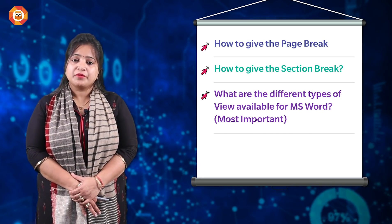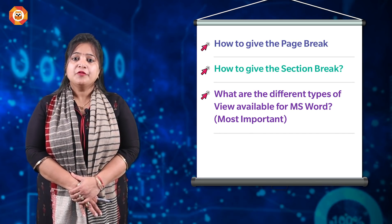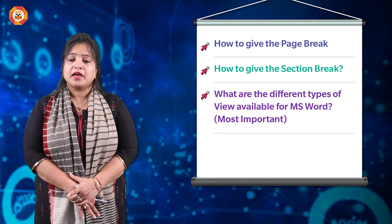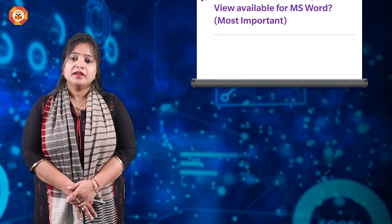The most important topic from Word is what are the different types of views available. There are around four to five types — learn their definitions thoroughly. The most important things are: you should know the steps for various tasks, and you should study the views very carefully. These were all questions from chapter three, Word Document.